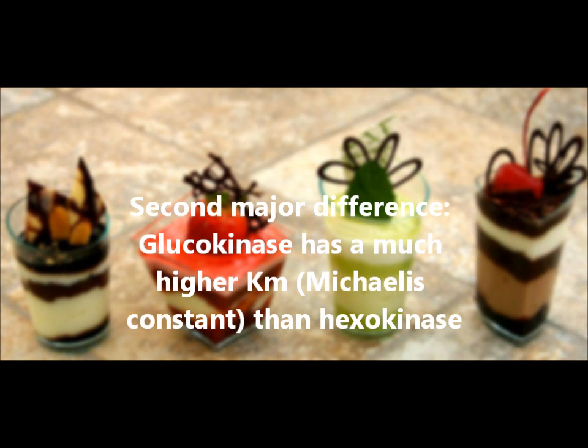In addition, glucokinase has a much higher Michaelis constant than hexokinase, meaning that it can convert glucose to its phosphate form at a faster rate should the cellular concentration of glucose rise significantly — for example, after a carbohydrate-rich meal. In muscle, the much lower Michaelis constant of hexokinase indicates that it is catalyzing at its maximum rate, even at normal glucose concentrations.